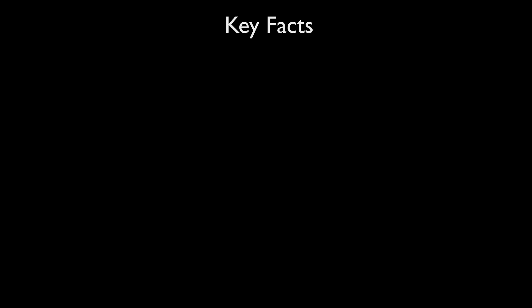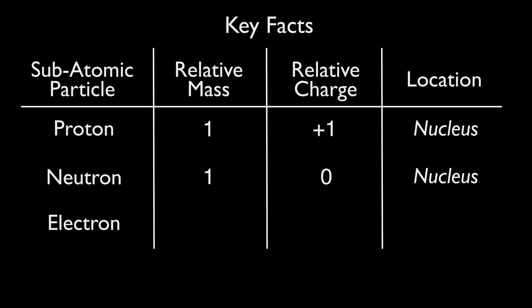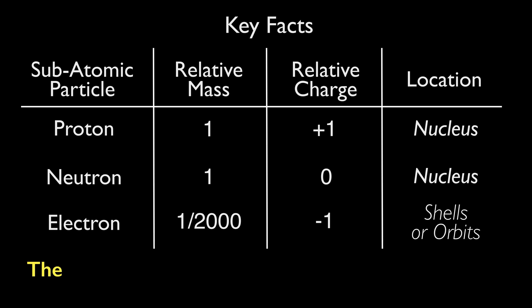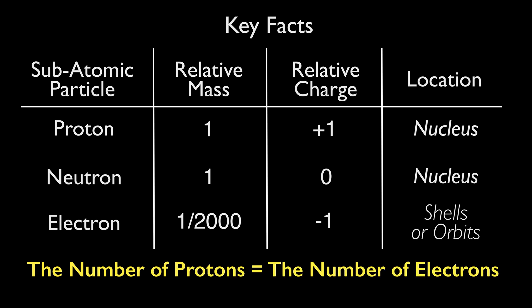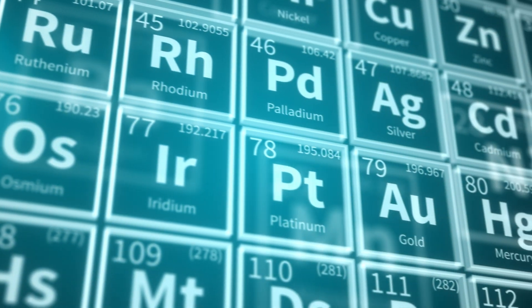Let's recap those key facts. The proton has a relative mass of one, a relative charge of plus one, and is found in the nucleus. The electron has a relative mass of one over two thousand, a relative charge of minus one, and it orbits the nucleus in shells or orbits. Remember that important exam tip: the numbers of protons and electrons will always be equal, regardless of which element you are talking about. In future episodes, we will meet the different types of atoms, or elements, and look at how they are organised in the periodic table.